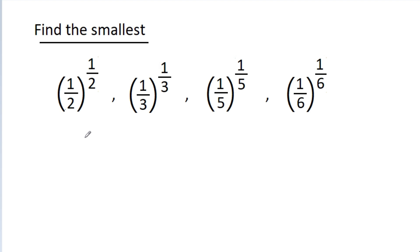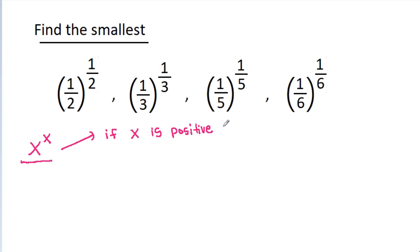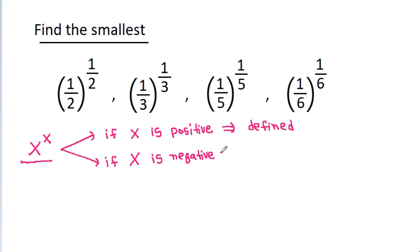Any number is of the form x^x, and this is very important and interesting. If x is positive, then x^x is defined. And if x is negative, then it is defined at some points and also not defined at others.